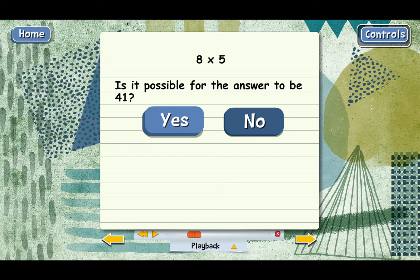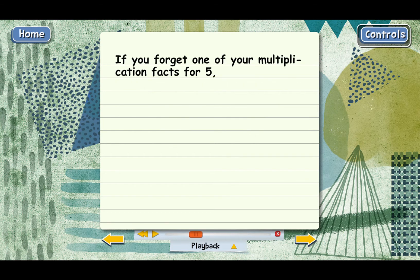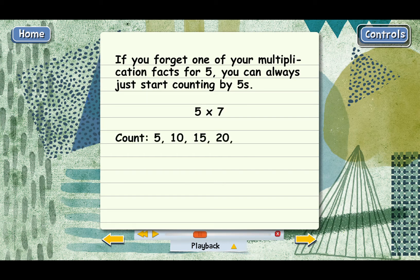Here's something else about multiplying by 5. If you forget one of your multiplication facts for 5, you can always just start counting by 5s, which is pretty easy. What if you forgot what 5 times 7 was? You could just count 5, 10, 15, 20, and then keep going until you reach the 7th number. That would be 5 times 7. Turns out to equal 35. Doing it that way is probably faster than looking up the answer in the multiplication table.